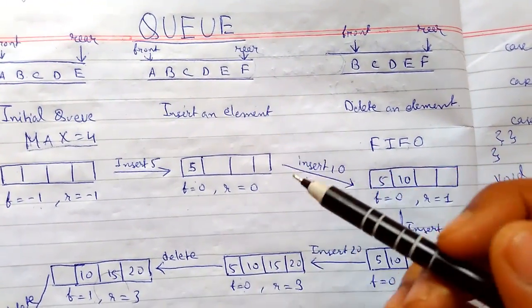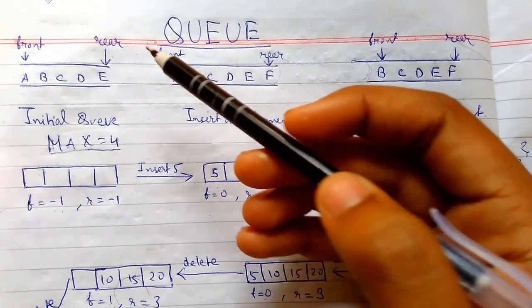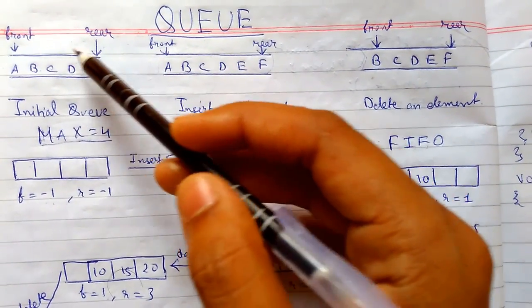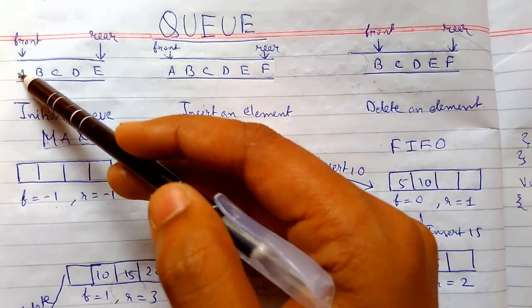Queue is a linear list in which elements can be inserted only at one end from the rear end and deleted from the other end, called the front end of the Queue.